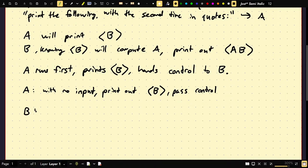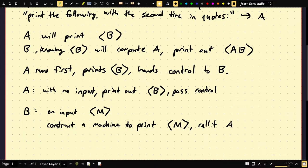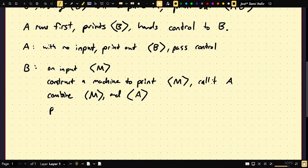So B, so B, by the way, cannot just print out A. If A prints B and B prints A, this is sort of a logical, like circular definition. That's not allowed. But B is going to do is on input, it's going to take in some machine. It's going to construct a machine to print M and we're going to call it A. So it constructs a machine A which prints out the string M. Right now we haven't used any machine property. Assume just B takes on an input string and then constructs a machine to print that string. Combine M and A. Print A, M and halt.